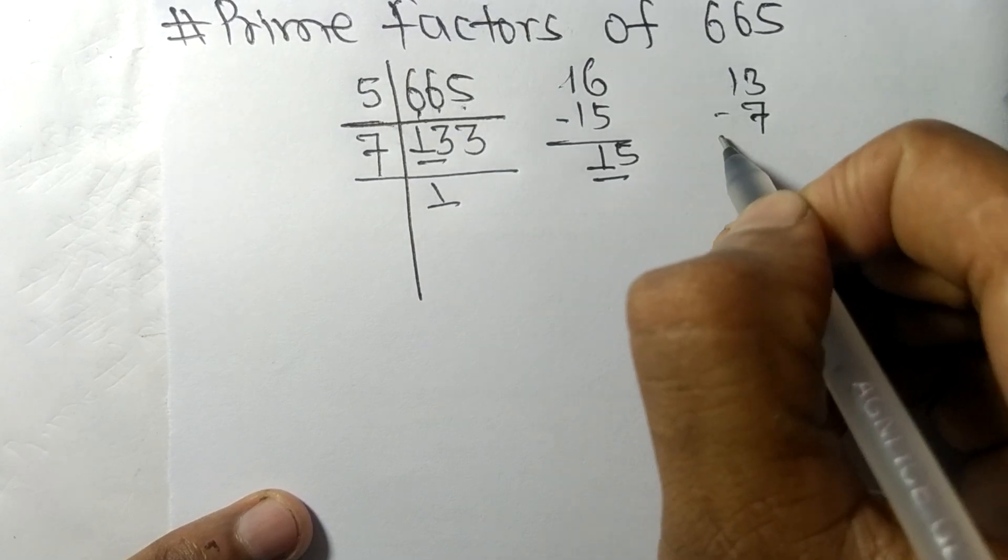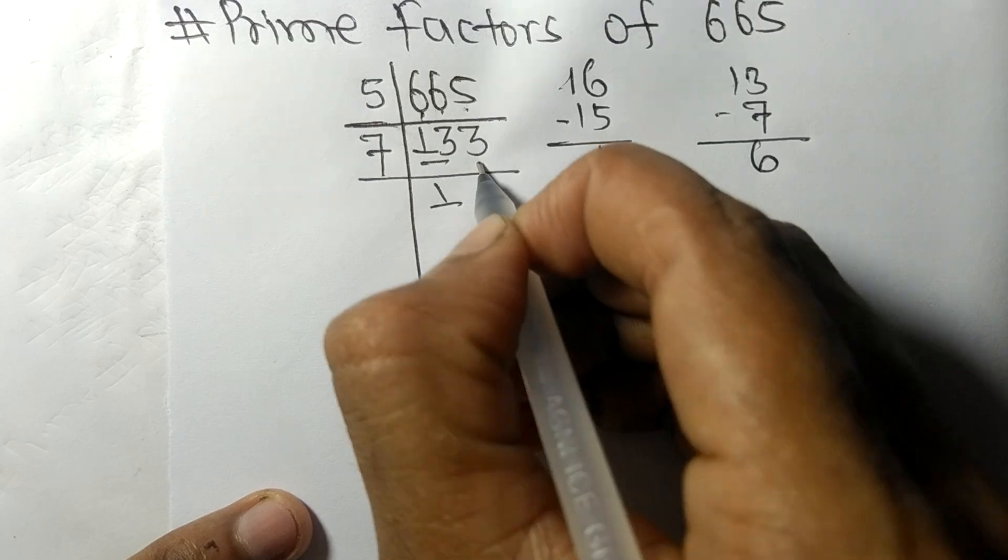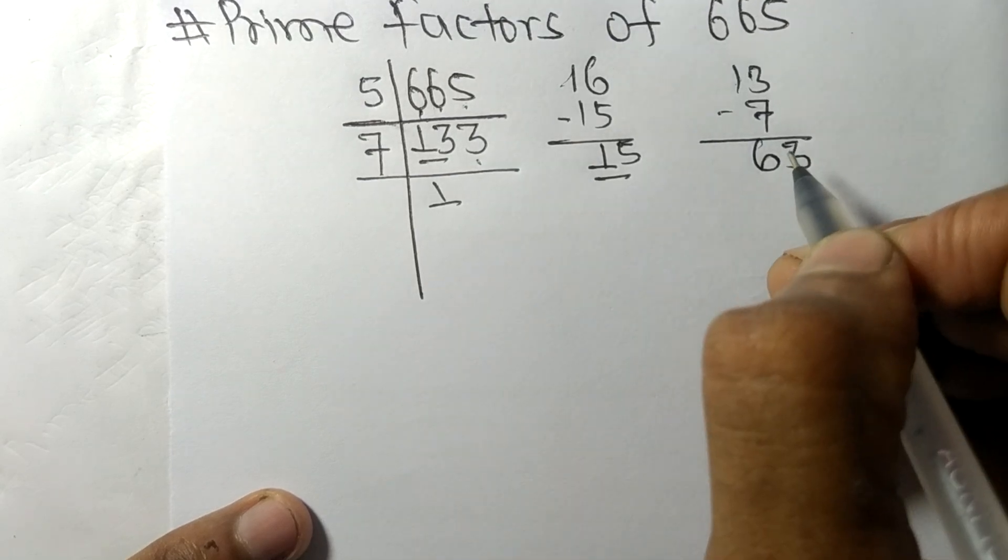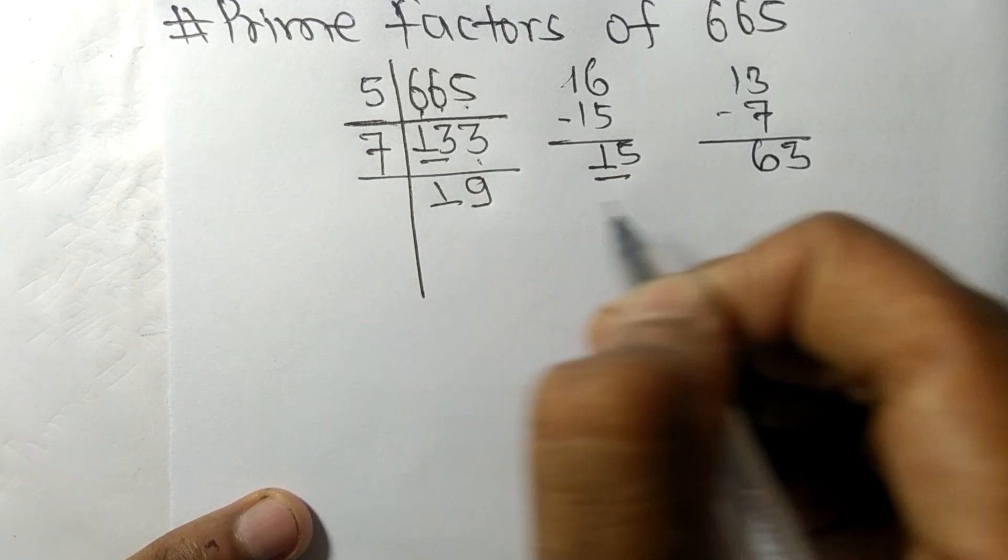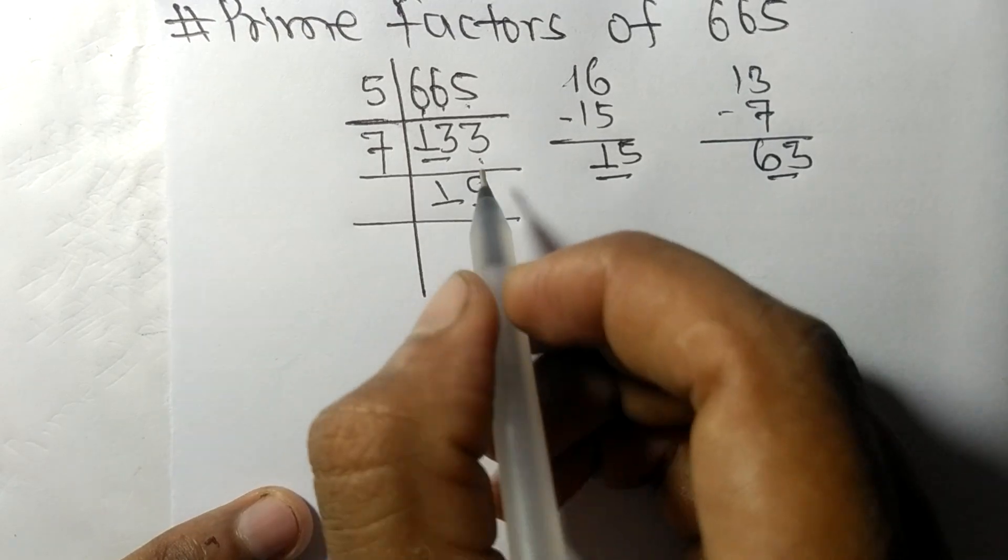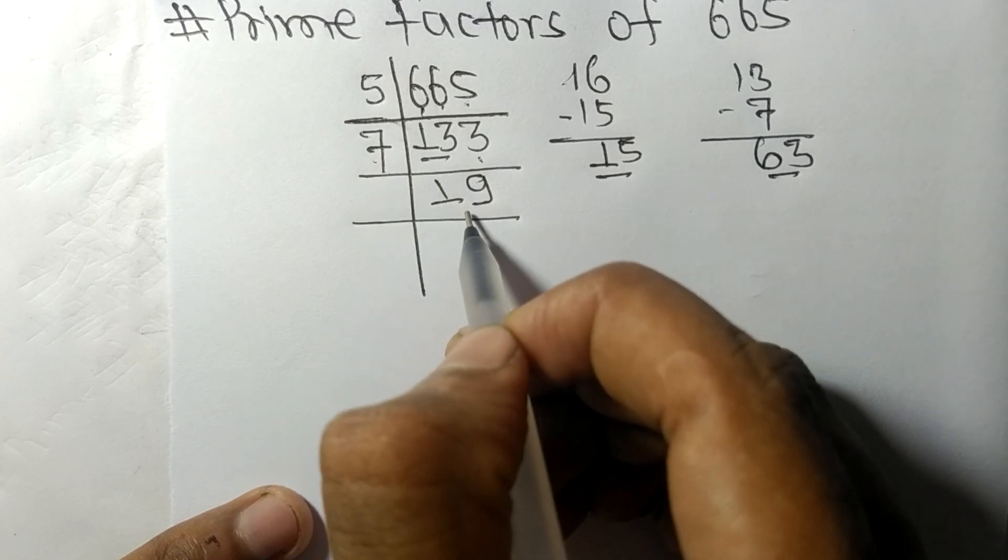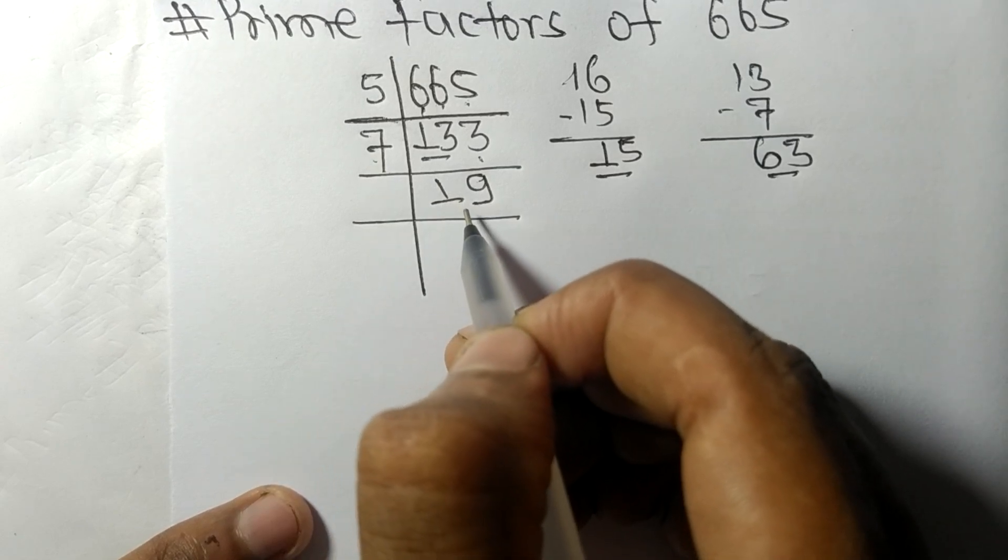7, and we get here remainder 6, and this 3. 63, 7 times 9 means 63. So now we got, on dividing 133 with 7, we got here 19.